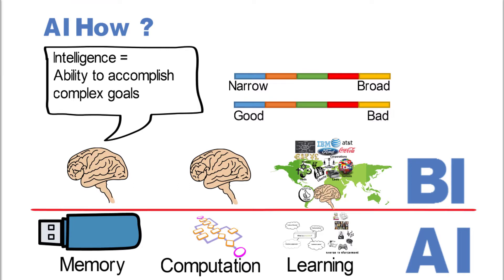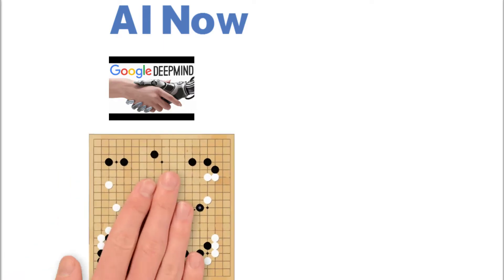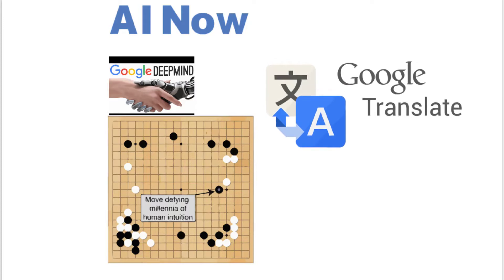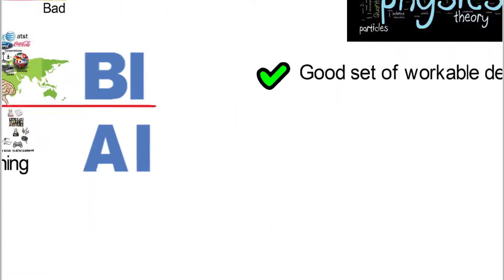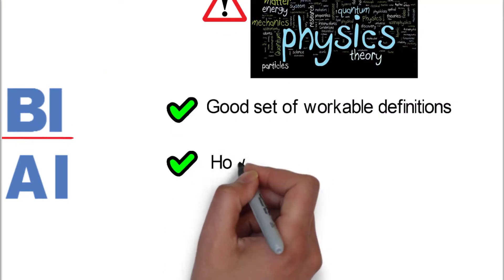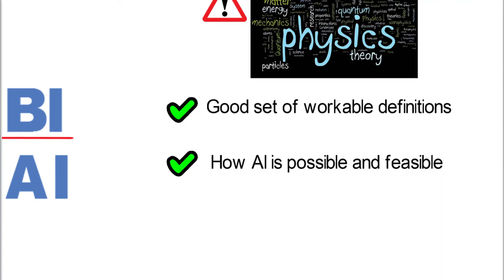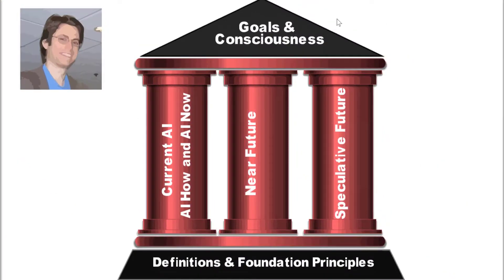Then he talks about intelligence can be narrow or broad and good and bad. There's no - it's not all good. Then he jumps into what is it now, what does AI look like now. He gets into that deep mind with the ability to win in Go and some of the things it did. He gets into Google translate and cars that drive by themselves. So he did a good job of talking about how AI is feasible and possible.